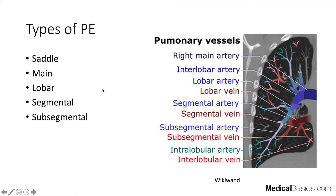A saddle PE sits right at the bifurcation of the right and left pulmonary arteries. Your lobar arteries come next, followed by the right and left pulmonary arteries — technically called the right and left pulmonary arteries rather than 'right main' and 'left main,' since there is a single main pulmonary artery. Then you have segmental branches, and once they branch again, subsegmental branches. Subsegmental PEs are sometimes not even treated depending on the patient.